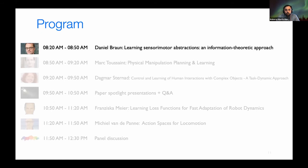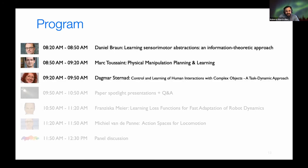So what is the program for today? This is a very exciting program we have. First, we have Daniel Brown from University of Ulm, thinking about how humans learn sensory motor abstractions with information theoretical approach. Then Mark will be fresh from the TU Berlin, telling more about physical manipulation planning and learning from robots. Our third speaker is Professor Dagmar Sternat, from Northeastern University that will tell us more about control and learning of human interactions with complex object dynamics. Each of our invited speakers will have 30 minutes of time.